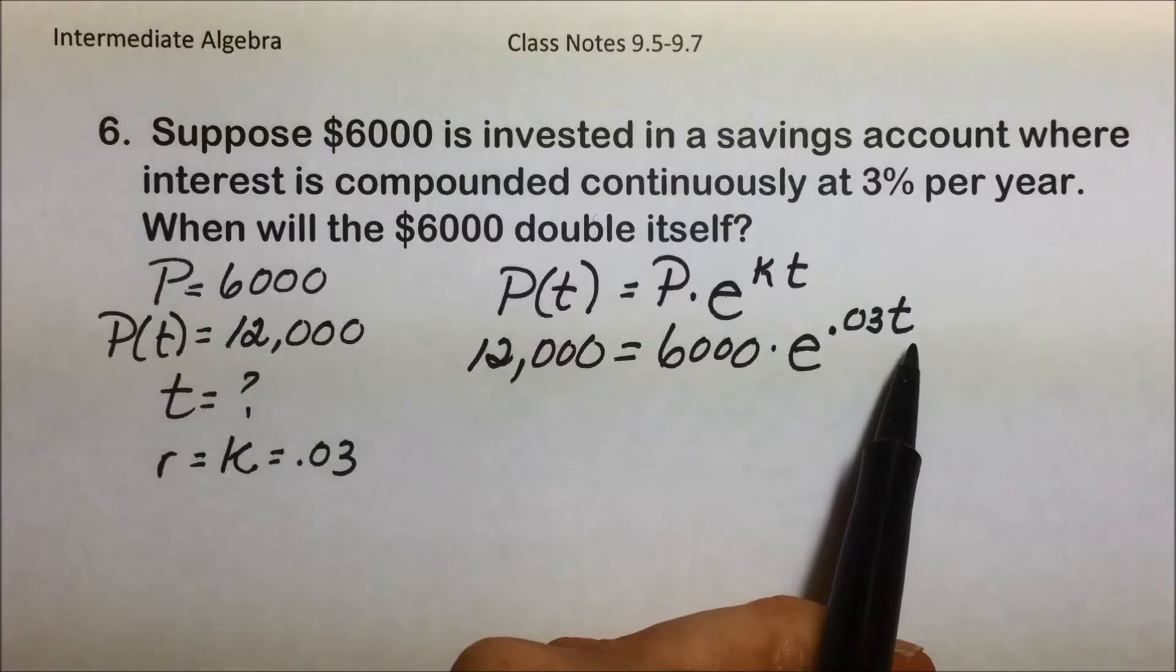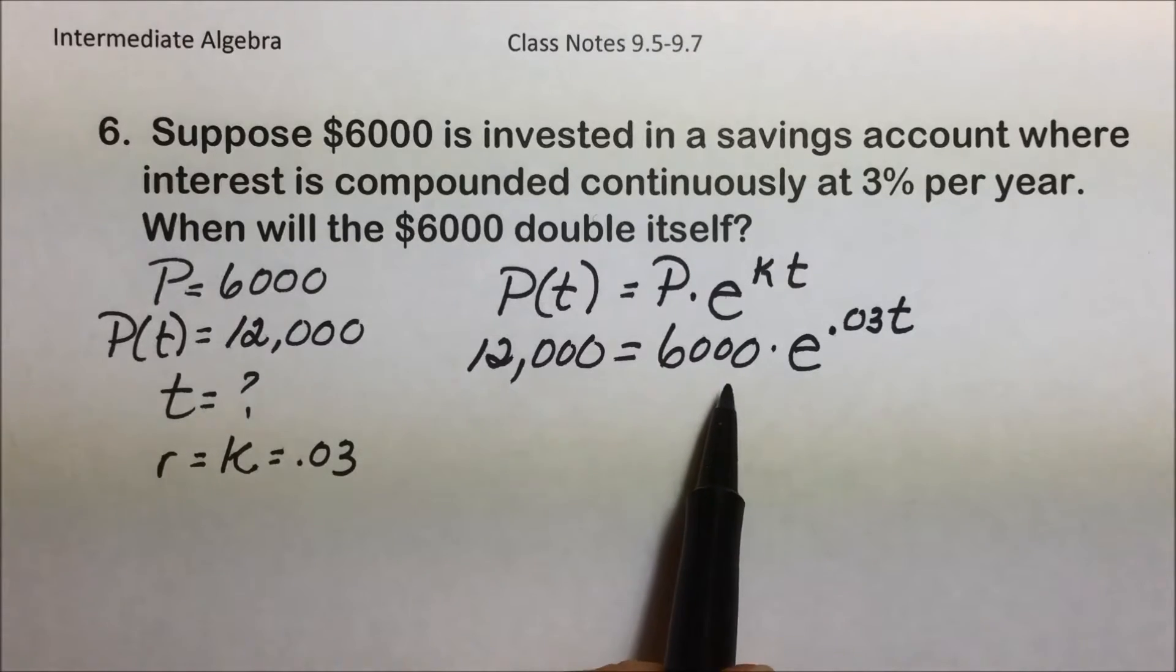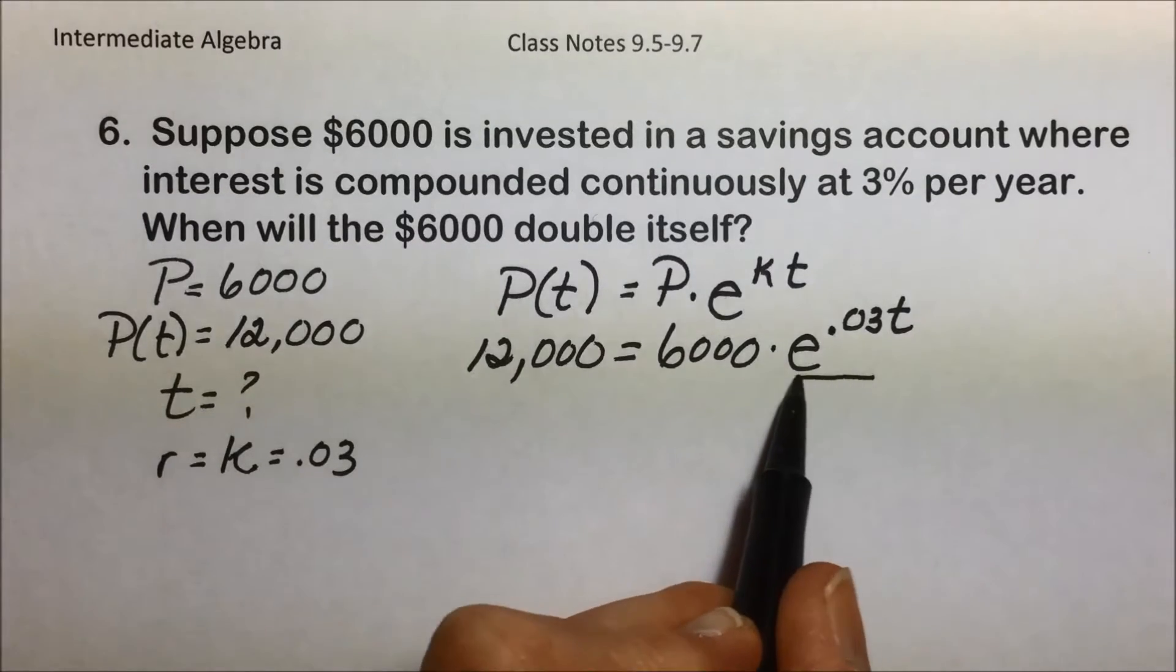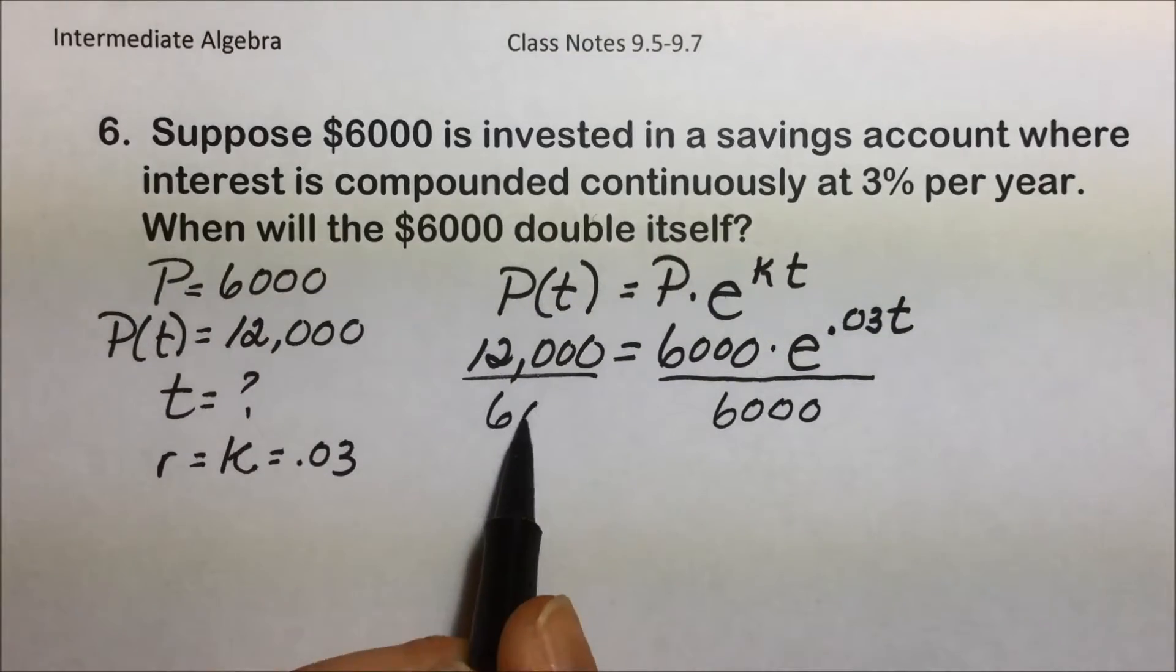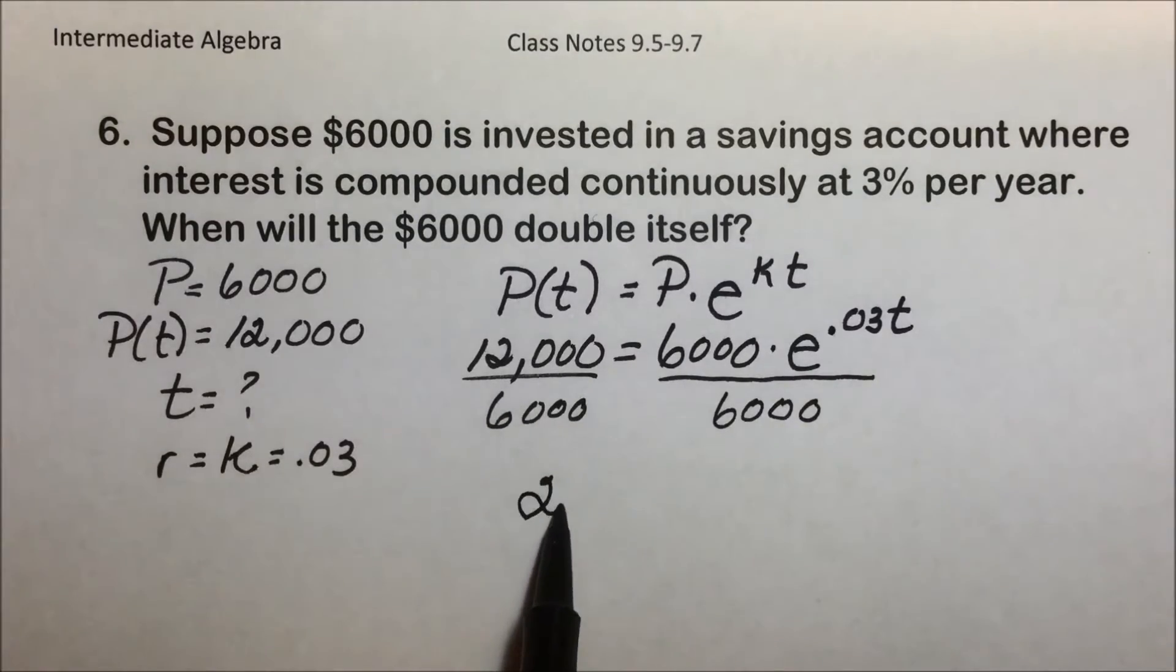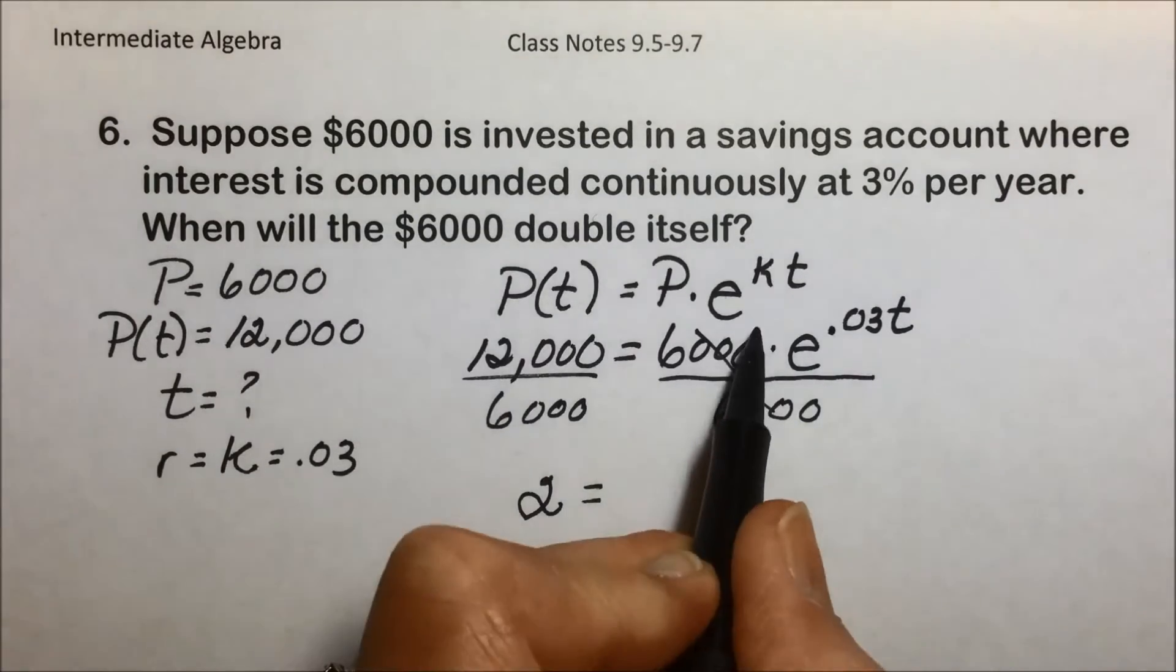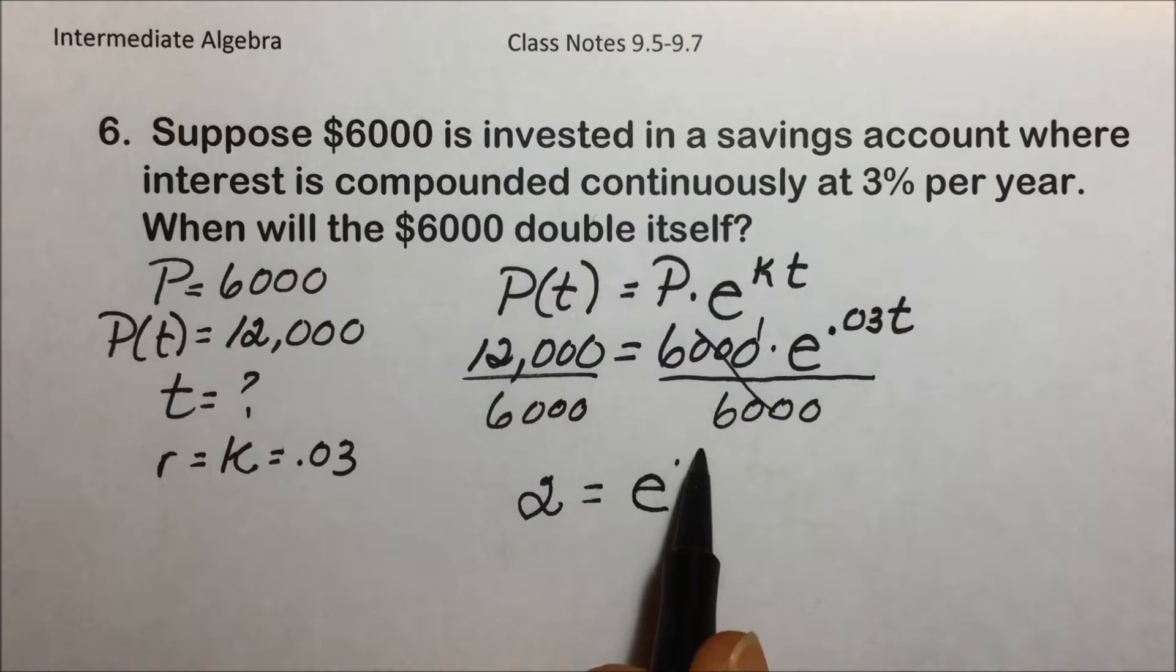Our variable is in the exponential position, and to solve for that, we first need to get our exponent by itself. We'll then take the logarithm, but first things first, divide both sides by 6,000. The 12,000 divided by 6,000 leaves a 2. The 6,000 over 6,000 is equal to 1, e to the 0.03 to the t power.